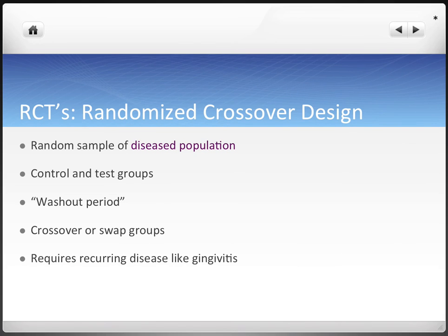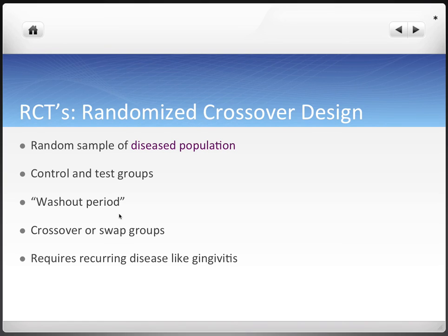There are two modifications to randomized clinical trials. Randomized crossover design uses a randomized sample of a disease population with control and test groups, but includes a washout period — we do the original assessment, wait some time, then cross over or swap the groups and repeat the test. Each subject serves as their own control, experiencing both treatments. This controls for possible baseline differences, but it's limited because it requires recurring disease, like gingivitis.